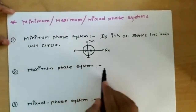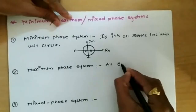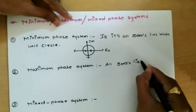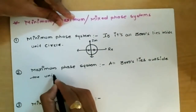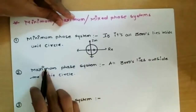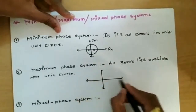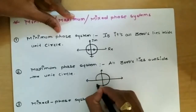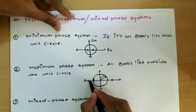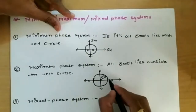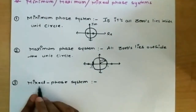The second category is the maximum phase system. A system whose all zeros lie outside the unit circle is known as a maximum phase system. Again, if you consider a unit circle with radius one, all zero points should lie outside this unit circle, where the boundary is at plus one and minus one.